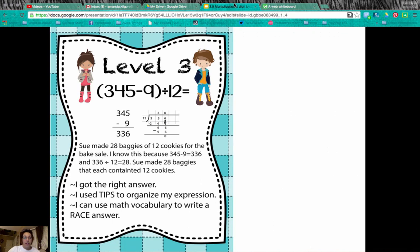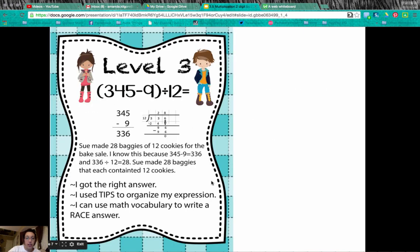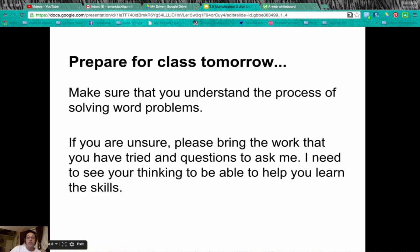So let's go back to this level 3. Did we write an equation? Yes, we did. Did we show all of our work? Yes, we did that too. We also used tips and race to write an answer. So let's look at making sure that you're really understanding the use of tips and the use of race. We will do some more practice in class.